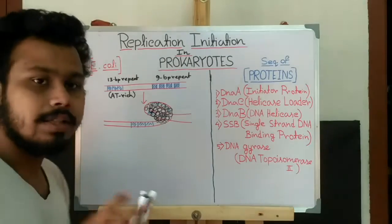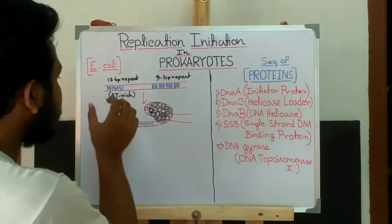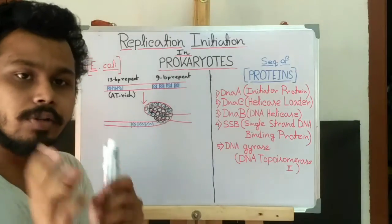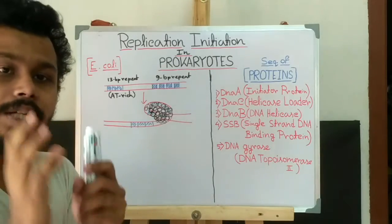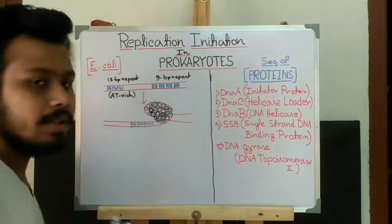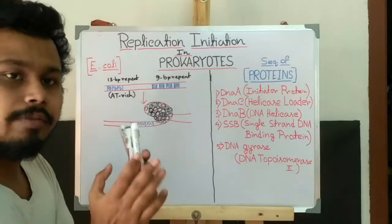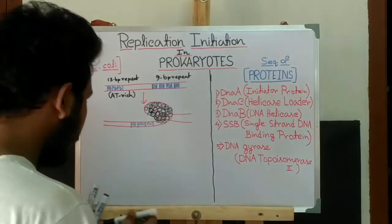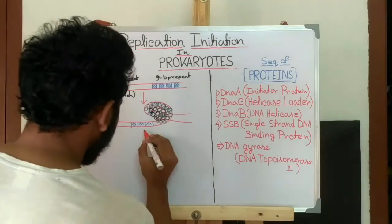And the AT-rich region is easily denatured from each other because AT-rich region contains only two hydrogen bonds between them compared to GC bonds that contain three hydrogen bonds. So AT-rich region is weak and they denature very easily and produce a replication bubble.